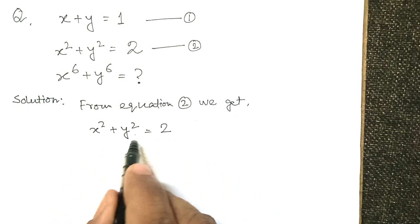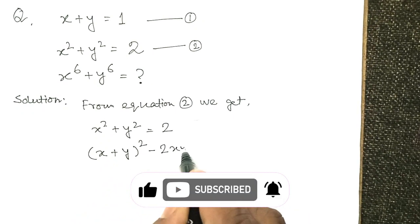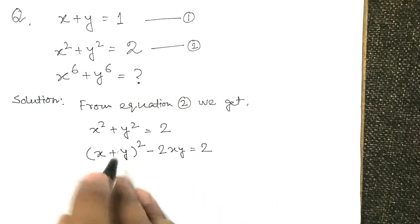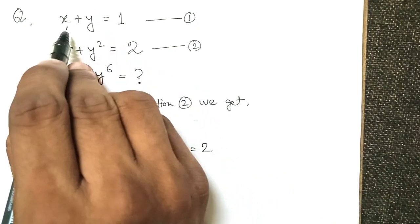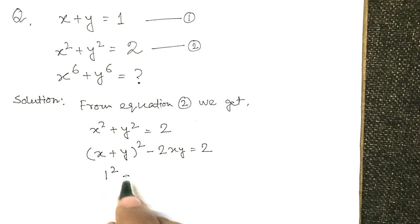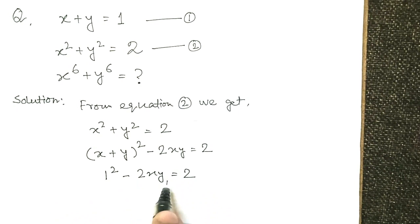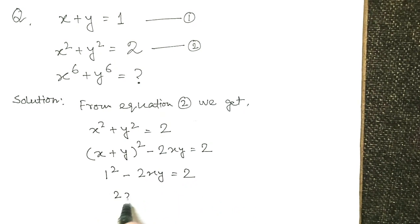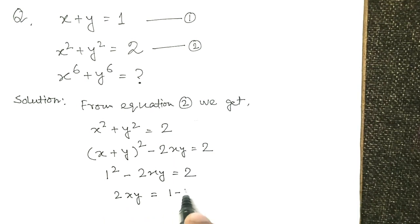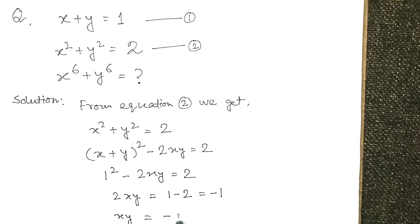We know that x squared plus y squared equals (x plus y) whole squared minus 2xy, so that equals 2. From equation 1, x plus y equals 1. Substituting, we get 1 squared minus 2xy equals 2. Rearranging, 2xy equals 1 minus 2 equals minus 1, so xy equals minus one-half, dividing both sides by 2.